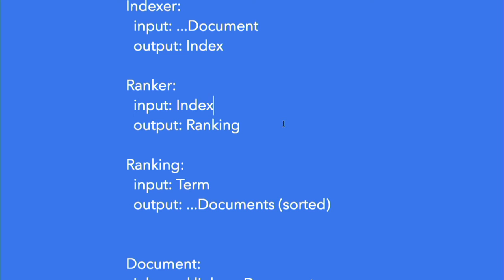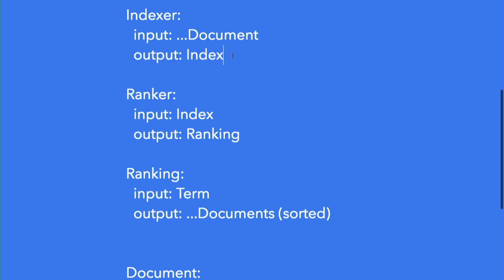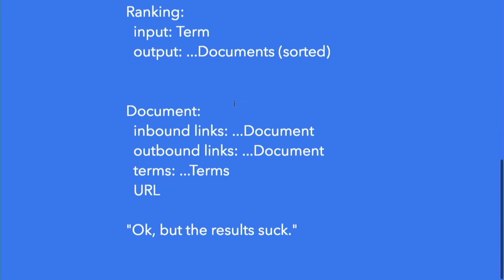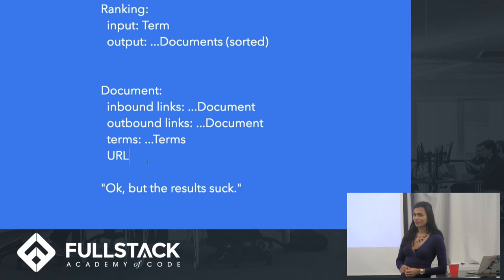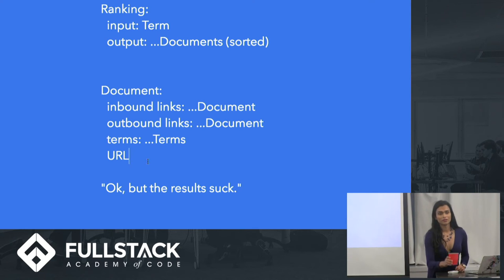That looks a lot like our database, in fact. Maybe this can happen after the indexer — the indexer takes a bunch of documents and outputs something that maps terms to documents. Let's call that output an index. And then there's something that takes an index and produces a sorted ranking. What are the smaller pieces we need? For each term we have a list of documents that contain that term. And for each document we know its inbound and outbound links, plus some other miscellaneous data.